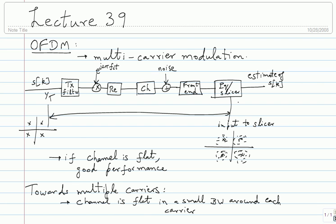If you do multi-carriers, you naturally have different frequencies and different transmit filters. In multiple carriers, people usually choose a rectangular pulse — because you have such a small bandwidth and are spending a very large time on each symbol. By adjusting the amplitude of the rectangular pulse, you get nice control over the overall spectrum that you're using. So multi-carrier gives you better control over subbands, which is also required from an information-theoretic point of view.